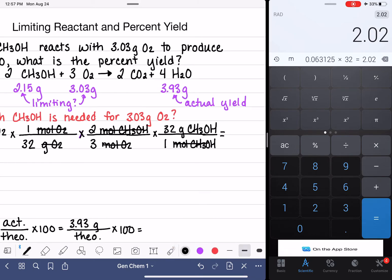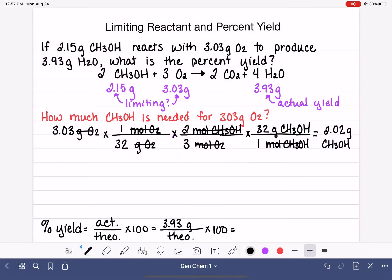So this problem looks like it's telling us that we need 2.02 grams of CH3OH are needed.